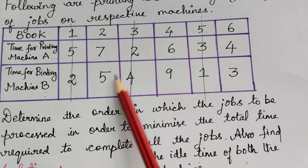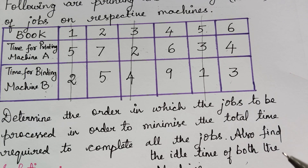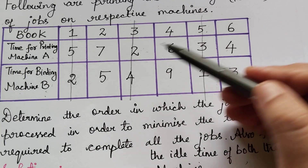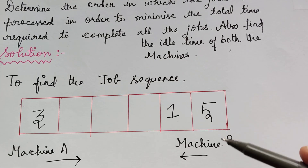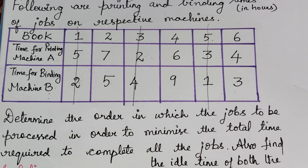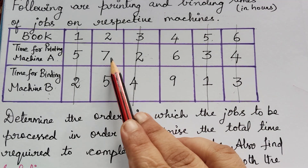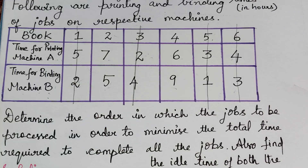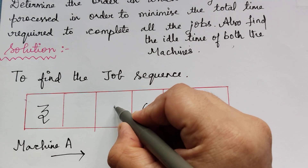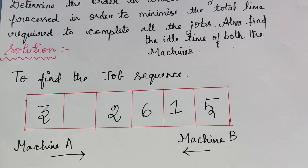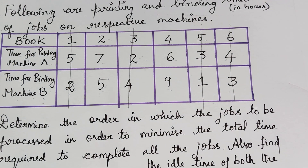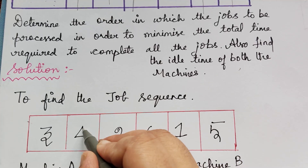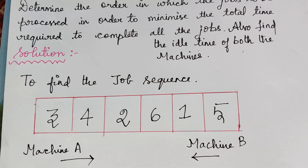These two are completed. Out of the remaining values, the least is 3, corresponding to job 6 and machine B. So job 6 is written under machine B and given a strike. The remaining values are 7, 6, 5, and 9. The least is 5, corresponding to job 2 under machine B, so job 2 is written there and struck out. The only job remaining is job 4, which is written in the left-out cell. This is the order of the job sequence.